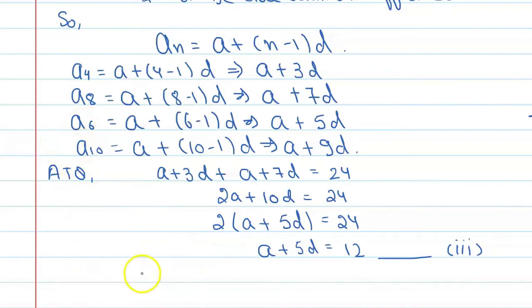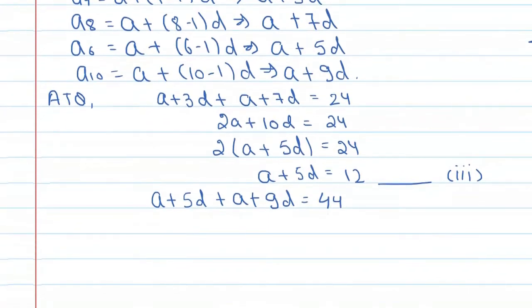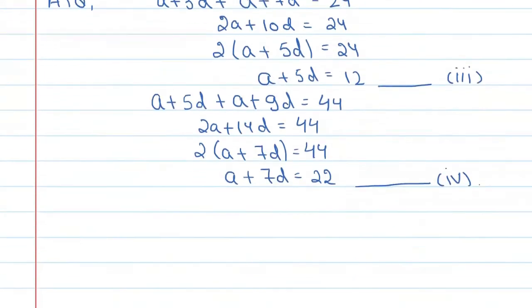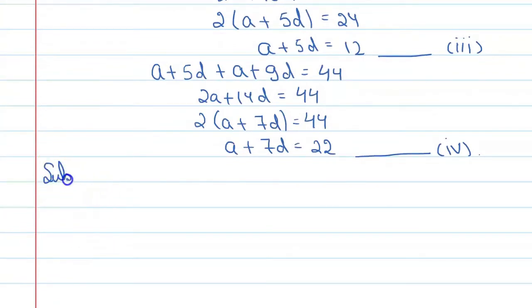Similarly, if you take A6 and A10 then you can say A6 plus A10 is equal to 44. Therefore, A plus 5d plus A plus 9d is equal to 44. So, this will become 2a plus 14d is equal to 44. Now, say this is equation number 4.